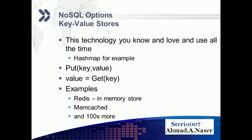There are many options when using NoSQL databases. The first is Key-Value Stores — we're talking about hash maps, for example. You put in a key and a value; this is essentially a hash map. Examples include Redis, an in-memory store, and Memcached.